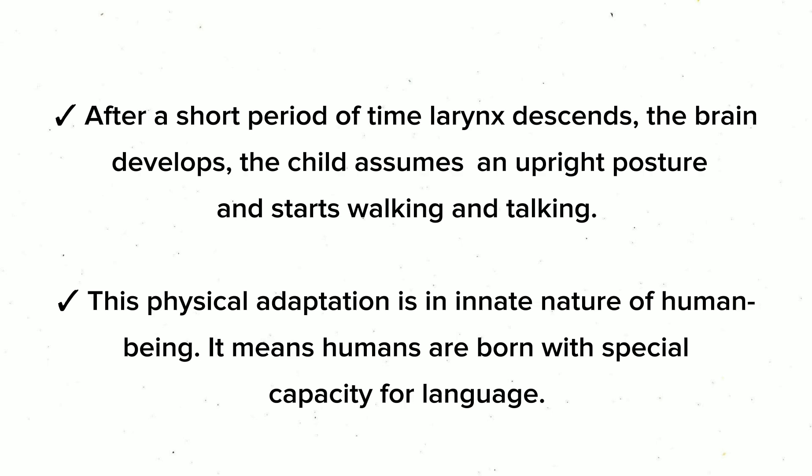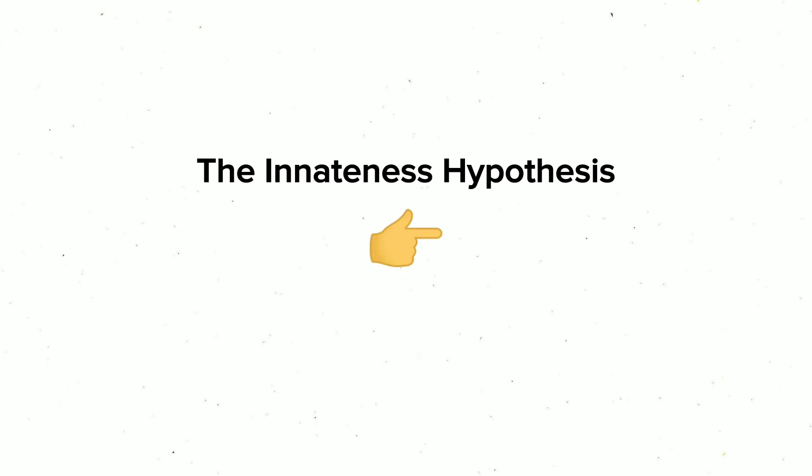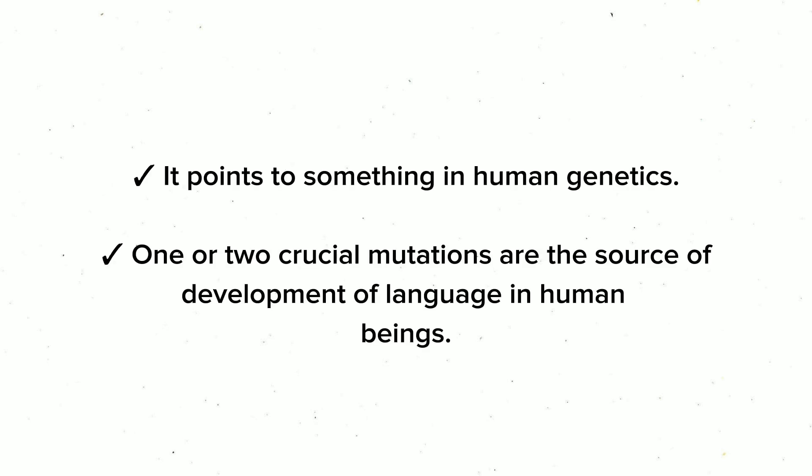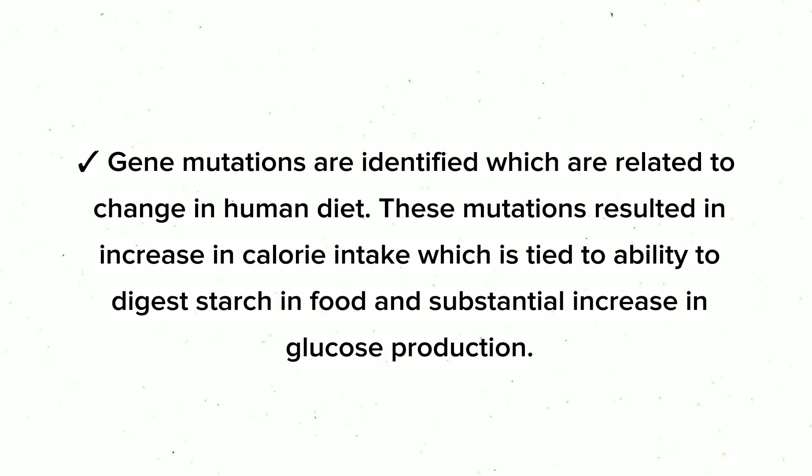The innateness hypothesis points to something in human genetics: one or two crucial mutations are the source of the development of language in human beings. Gene mutations are identified which are related to changes in human diet.